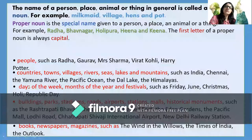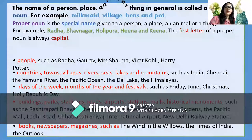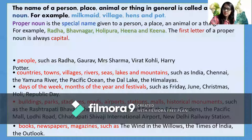Let me give you a few more examples to clarify what exactly a common noun is. A name of a person, place, animal, or thing in general is called a common noun. Examples: milkmaid, village, hens, and pot.